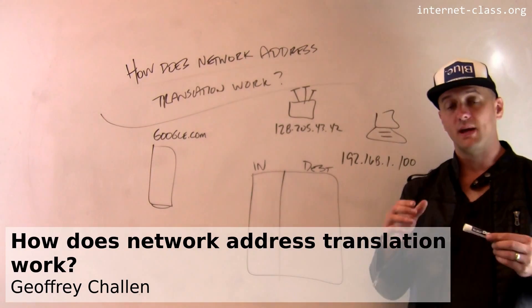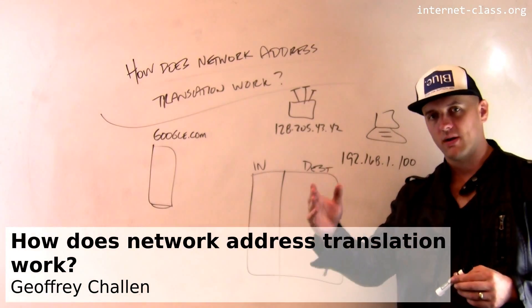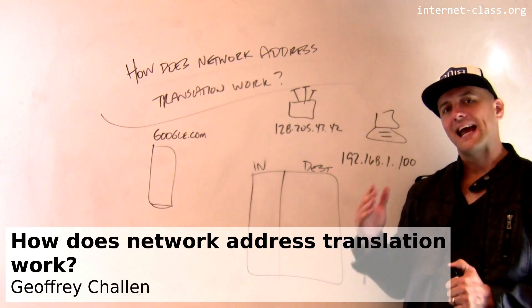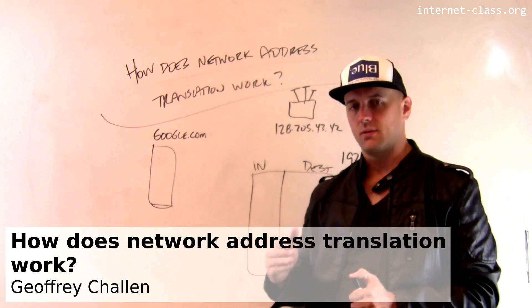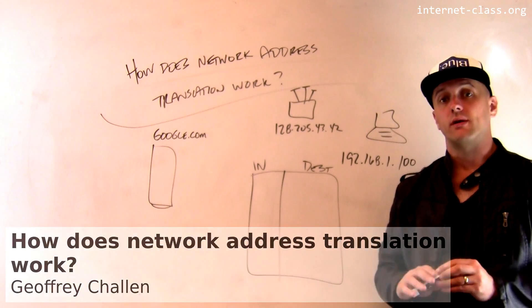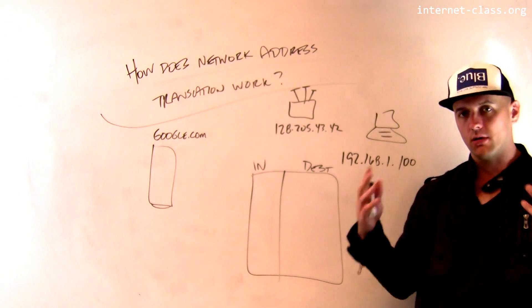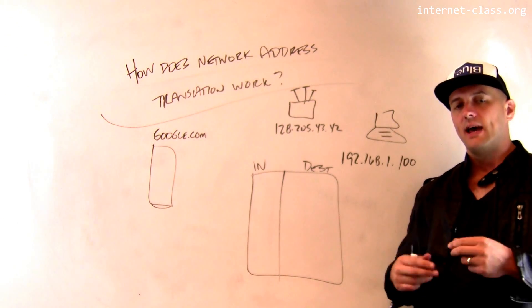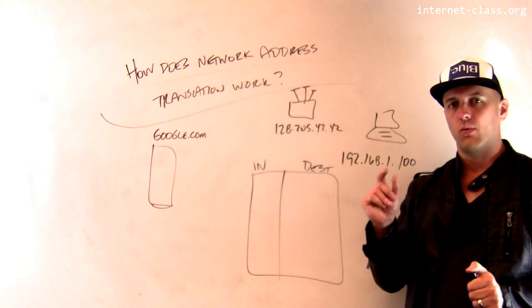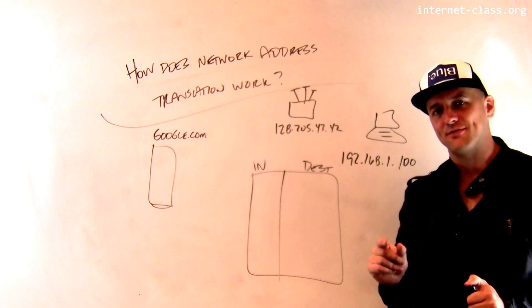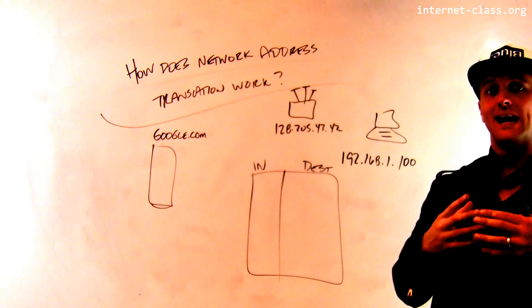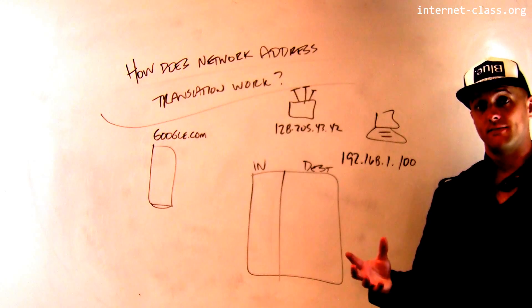Now that we know about TCP and UDP port numbers, we're ready to talk about how network address translation works on the Internet. This is pretty important — it's really common, happens all over the place, and it's a critical way that we've addressed one very interesting design flaw with the Internet, which is that we don't have enough IP addresses.